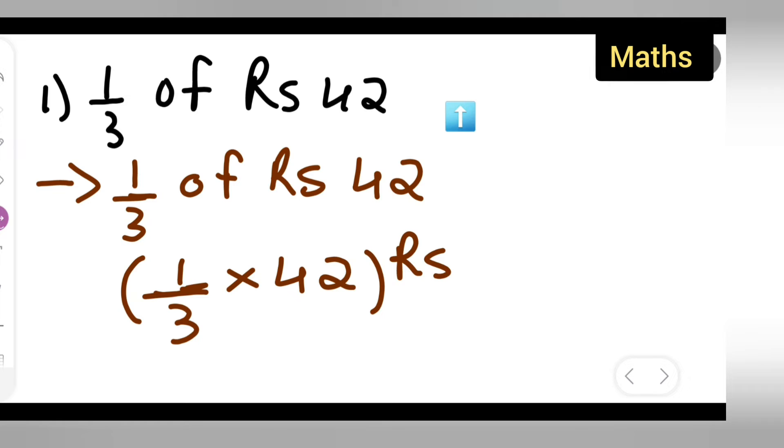You can write down rupees on this side or here, there is no problem in that. Then you can write down rupees. Then you all can cancel this. First write down 42 upon 3.